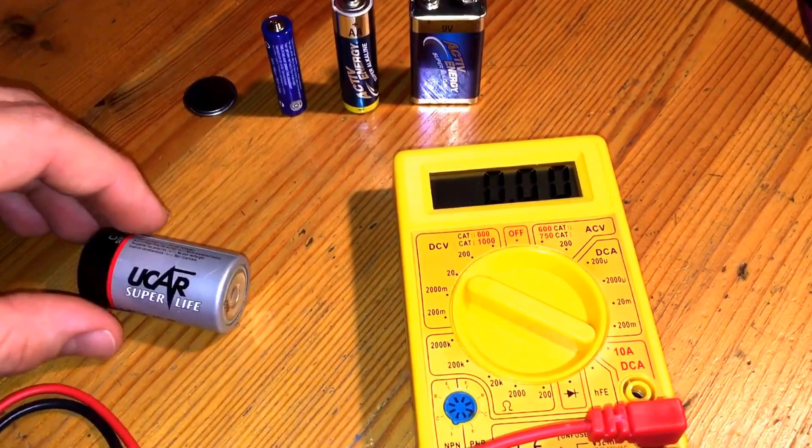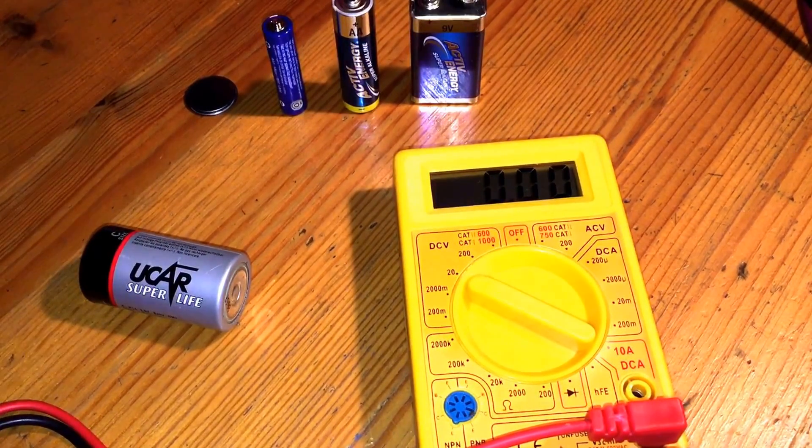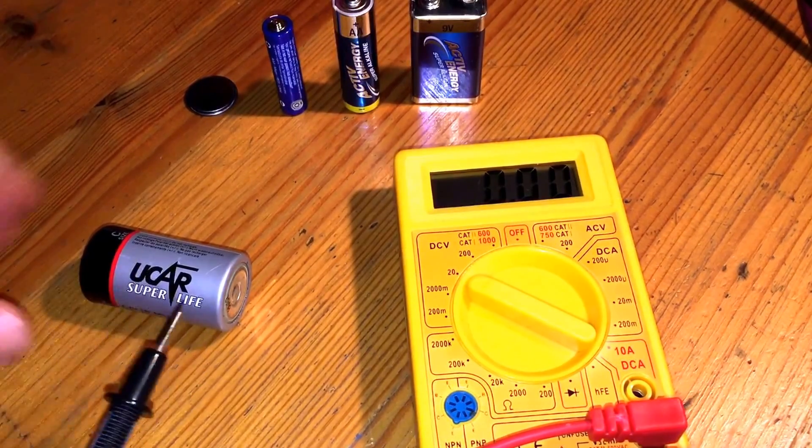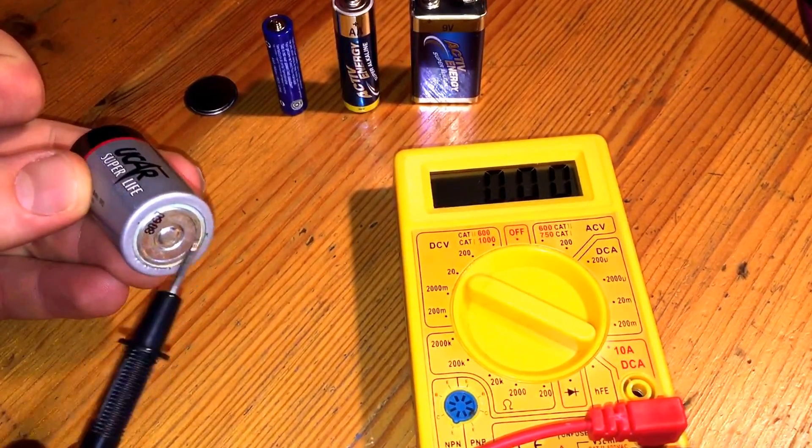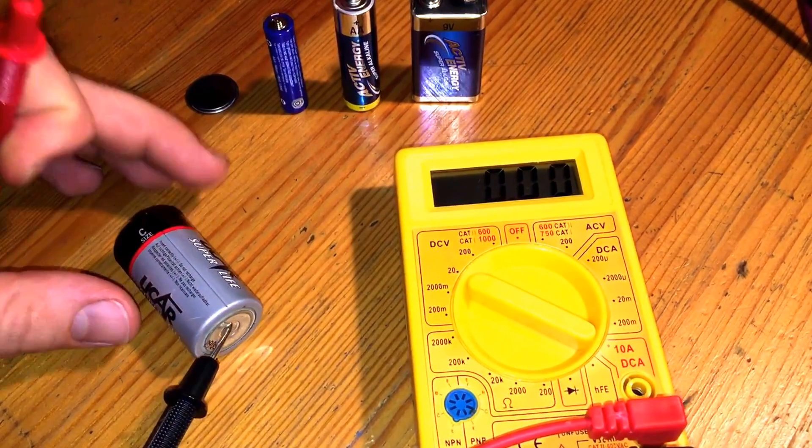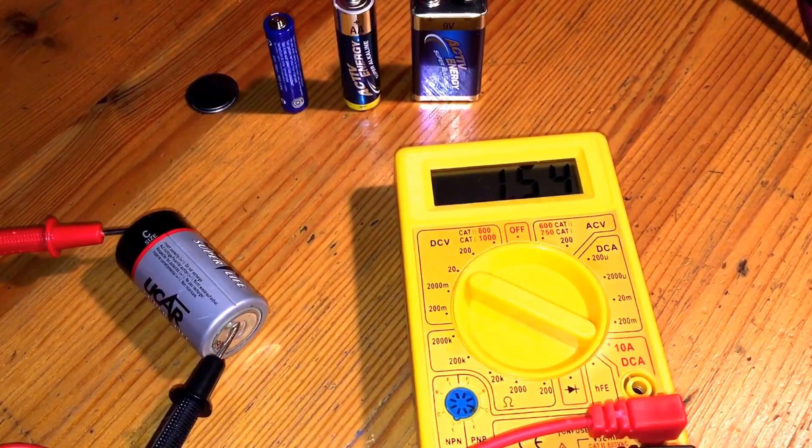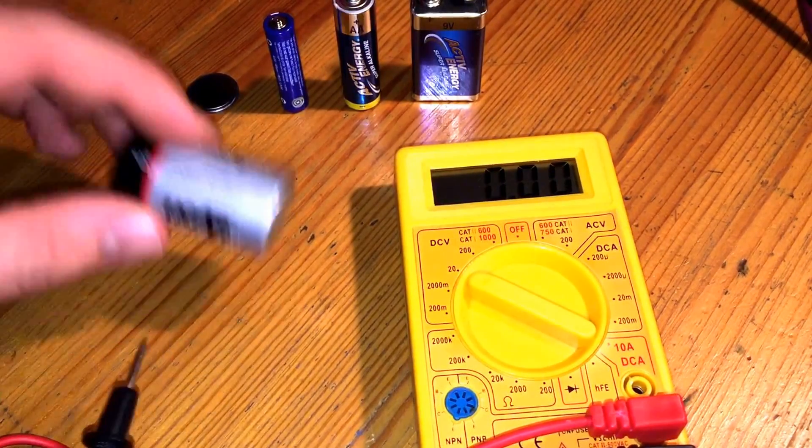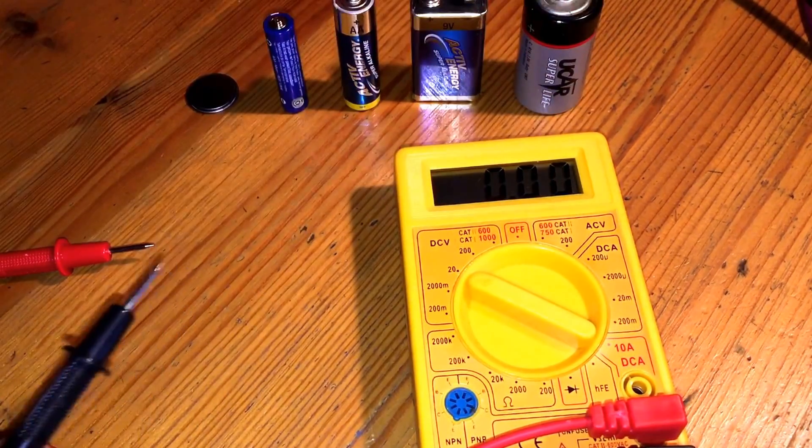That's the same for this kind of battery size. This is a C battery, baby. This is the minus, and this is the plus area. Minus black, plus red. You see? 1.54. It's full. Good job.